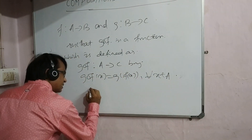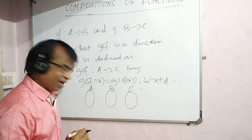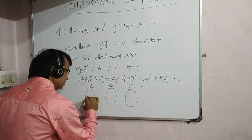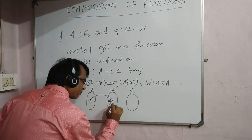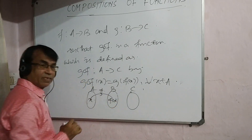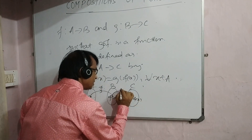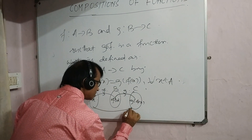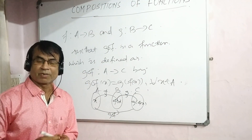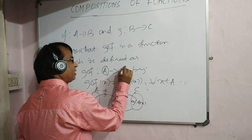There are three sets: set A, set B, and set C. Let x be an arbitrary element of A. The image of x in B is f of x, and the mapping is f. Then f(x) is an element whose image lands in C via g. So g of f is a function from A to C.